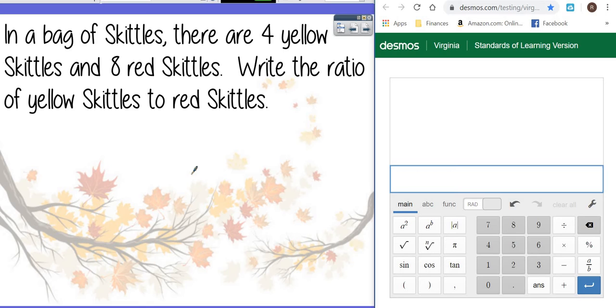This here is talking about in a bag of Skittles there are four yellow Skittles and eight red Skittles, and they want a ratio of yellow to red. So the first thing we can do is count the yellows which they said were four and we're going to put them on top and the red is eight.